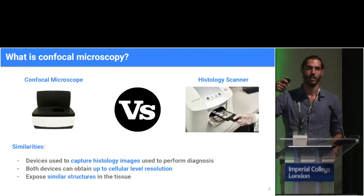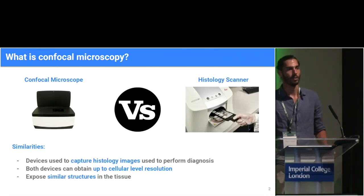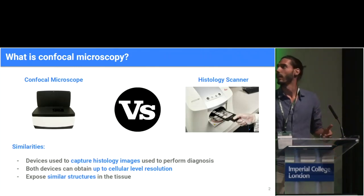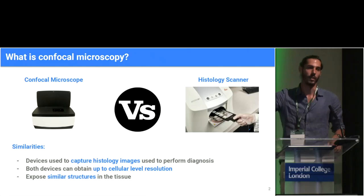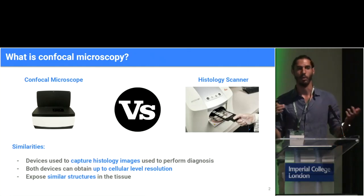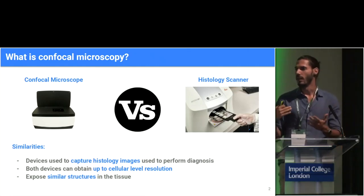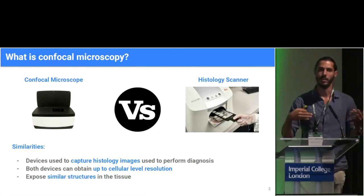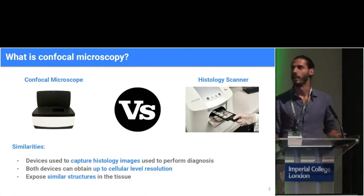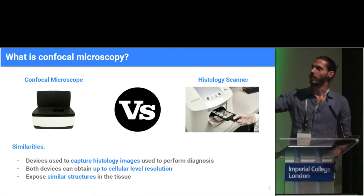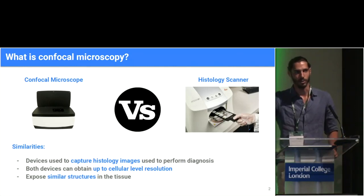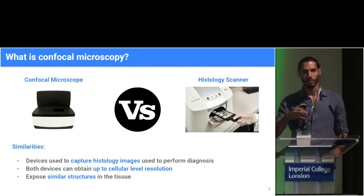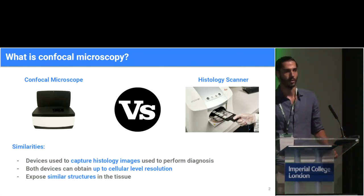First of all, what is confocal microscopy? Confocal microscopy has a lot to do with histological imaging in the sense that both techniques are used to obtain images of tissue samples, and then these images can be used to perform diagnosis. Both devices can obtain similar resolutions — they can go up to cellular level resolutions and they expose similar structures in the tissue.